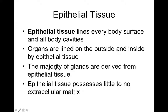Glands are made of epithelial tissues because glands often have an internal space. For instance, a gland that makes a secretion like sweat or oil will have an epithelium lining its duct that can make the secretion. Epithelial tissues possess little to no extracellular matrix, meaning they are mostly densely packed cells.